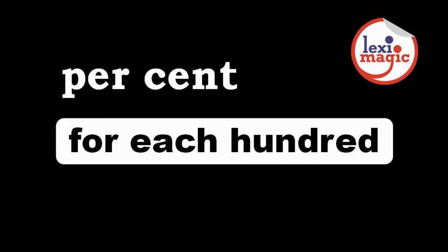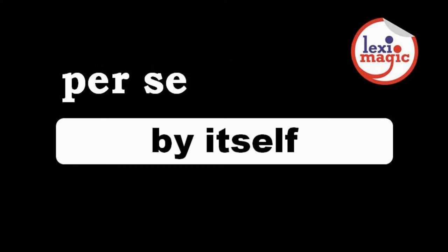Percent means 'out of 100.' For example, only 85% of the men are literate in our country. Per se means 'by itself.' For example, my neighbor per se is a good man, unless you intend to bring his wife into the equation.